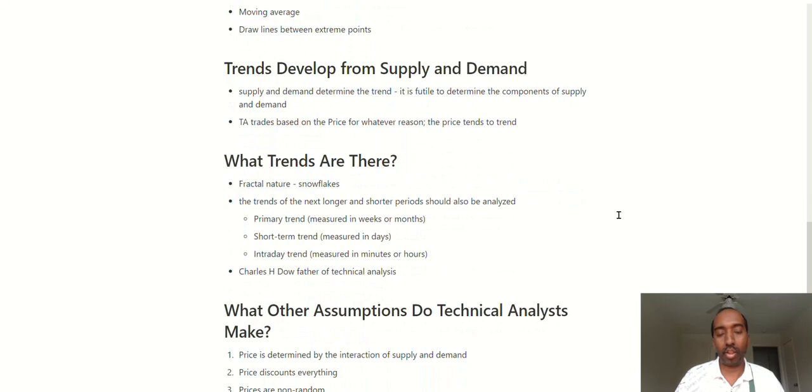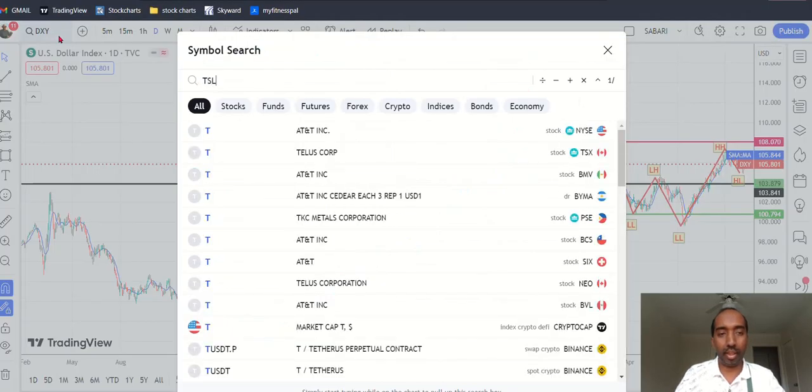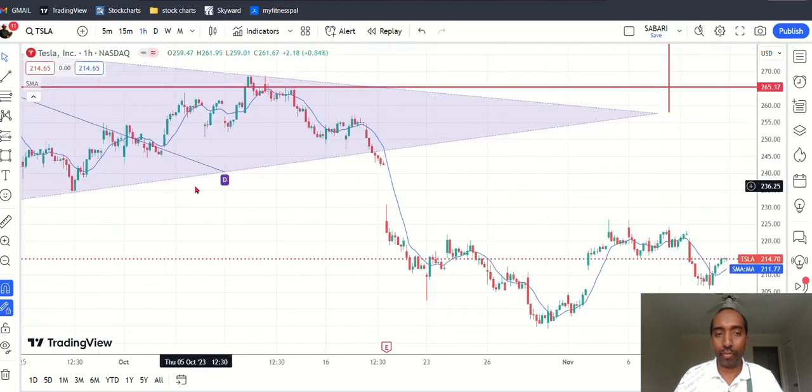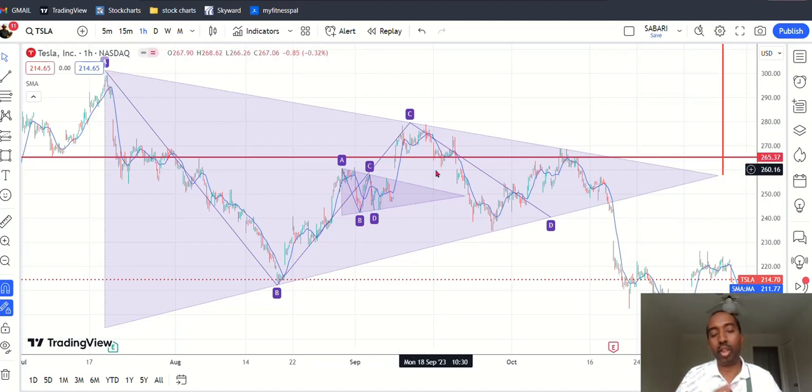What trends are there? Fractal nature. Trends are fractal in nature. Like in snowflakes. Let me show you. If we see Tesla, in the weekly chart or in the daily chart, you can see a triangle pattern formed. But similar pattern, if you go down in the hourly chart, there is a smaller triangle formed within the bigger triangle. The meaning is a group of triangles creates a bigger triangle.